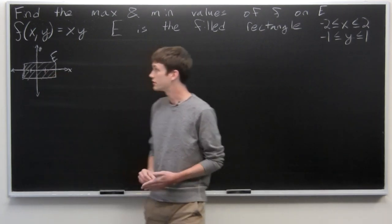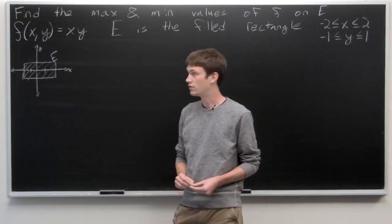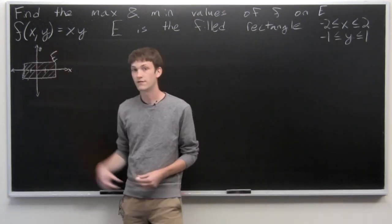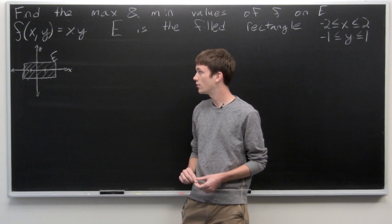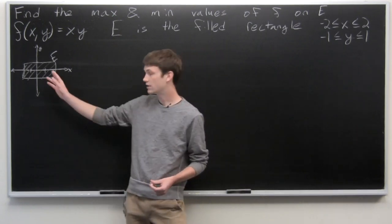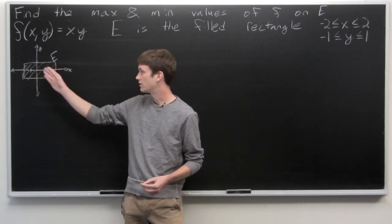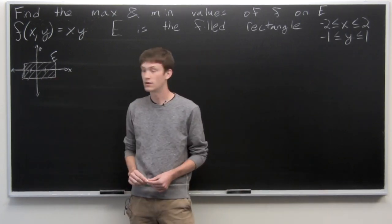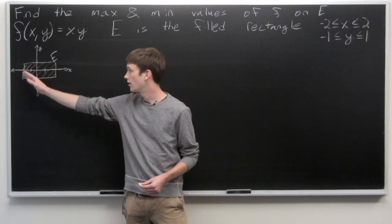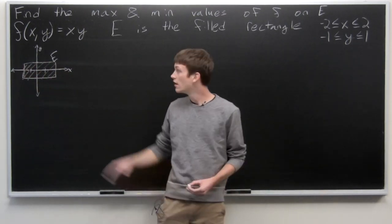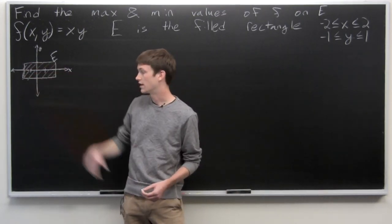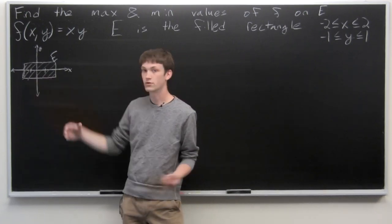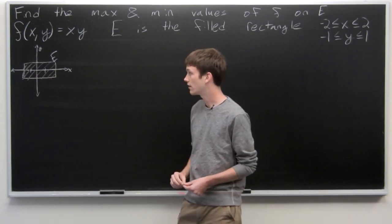We'll take the gradient vector of our function f and find the critical points. We're only interested in critical points that lie within the interior of region E. We're also going to have to check the boundary points — where x equals 2 and negative 2, and y equals 1 and negative 1 — to see if the boundary contains the maximum or minimum values.